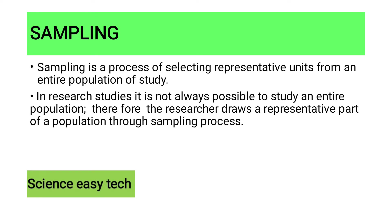Sampling is a process of selecting representative units from an entire population of study. In research studies, it is not always possible to study an entire population. Therefore, the researcher draws a representative part of the population through the sampling process. Sampling is nothing but taking a subset from a large population — that process is called sampling.